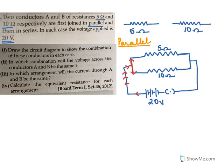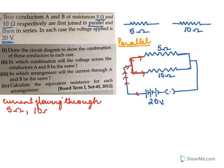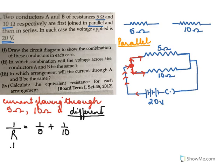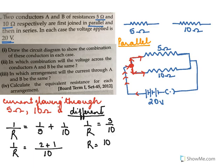In the parallel connection, whatever current comes out of the battery splits into two parts — part flows through 5 ohms and another part flows through 10 ohms. So the current through 5 ohms and 10 ohms is not the same; the current is different in each branch. To calculate the equivalent resistance for the parallel combination: 1/R equals 1/5 plus 1/10. Taking LCM as 10, we get 1/R equals 3/10, so R equals 10/3 ohms.